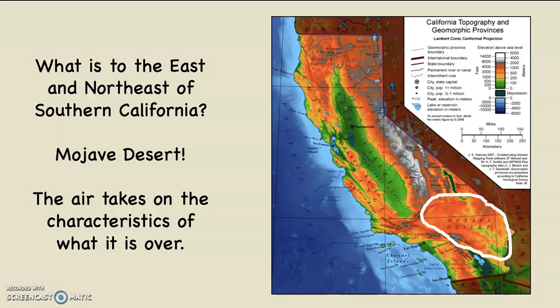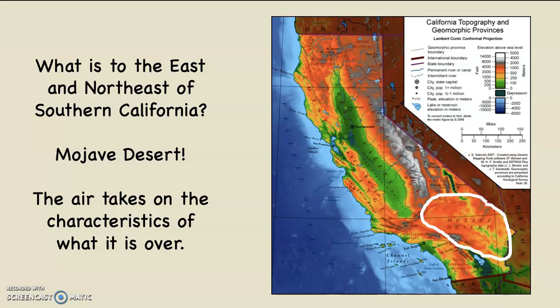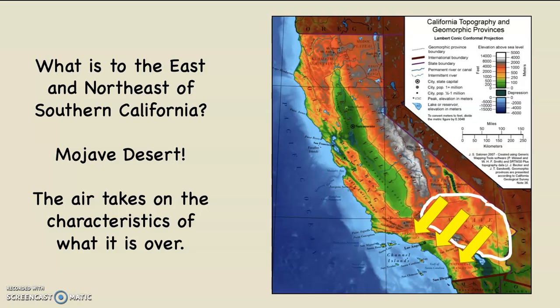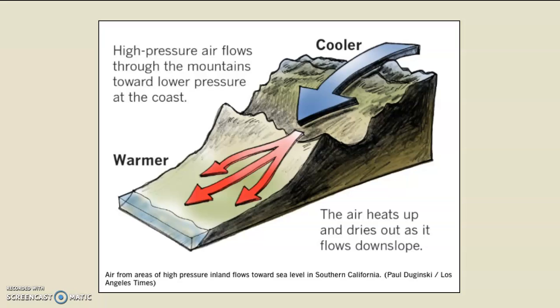The air takes on the characteristics of whatever it's over. Since the air is starting out over the desert, it's going to start out dry. The yellow arrows show the direction of air movement from the Mojave into Southern California. A Los Angeles Times report showed a big high-pressure system to the northeast, with red arrows indicating strong northeast winds and lower pressure offshore — air flows from high to low. The air comes from the desert, up over the mountains, and descends toward the coastline, with the blue arrow showing movement from desert over the mountains, and red arrows showing downslope flow into Southern California.